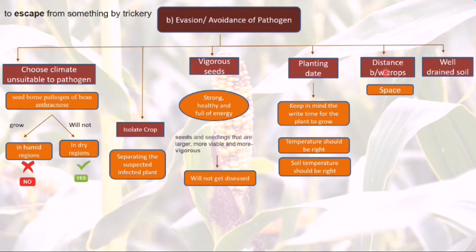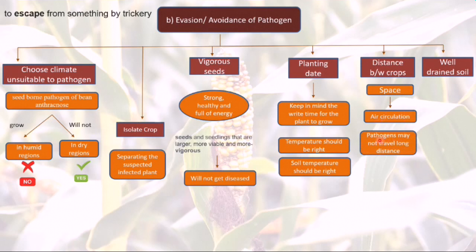Distance between crops is very important because it provides air circulation. If you plant two crops very close, there will be less air circulation and more pathogen. With proper air circulation, pathogen attack will be less. There is also probability that pathogens may not travel long distances, so keeping space between two crops means the pathogen will not easily travel from one crop to another. This is also a good preventive method.